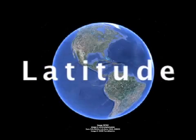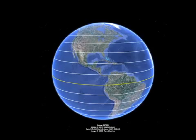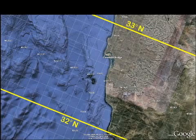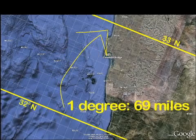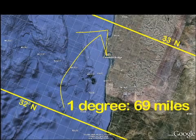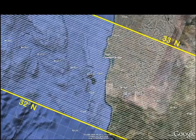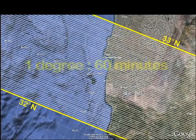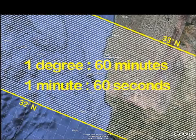Latitude. Lines of latitude, also known as parallels, circle the globe from east to west. These lines are all the same distance apart, about 69 miles. Each degree of latitude is separated into smaller pieces called minutes — there are 60 minutes in one degree. Similarly, each minute is divided into 60 seconds.